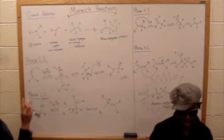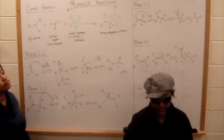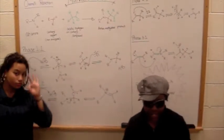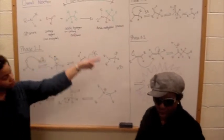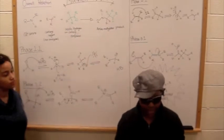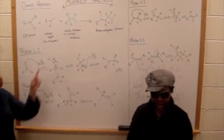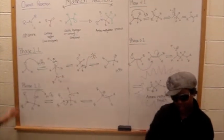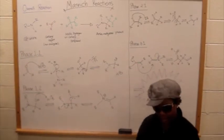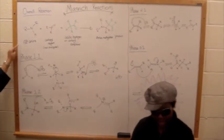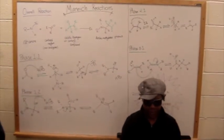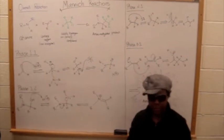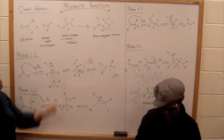The Mannich reaction is in the morning, and we are going to do this in three phases — phase one, phase two, and phase three. In the end, we are going to make an amine. So let's start with the carbonyl, with the primary or secondary amine. Because here we have something else — an acidic proton for the carbonyl.